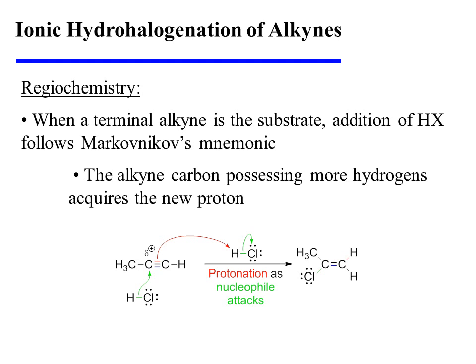When a terminal alkyne is the substrate, there is a basis for selectivity during the initial addition of HX. Specifically, this addition will follow Markovnikov's rule — the alkyne carbon possessing more hydrogens will acquire the new proton. As the alkyne is protonated, positive charge begins to develop on one of the two alkyne carbons, and it is clearly preferable for that positive charge to develop on the more highly substituted, secondary carbon. Therefore, it is that secondary carbon which attracts chloride, leaving us with specifically one vinyl chloride product.